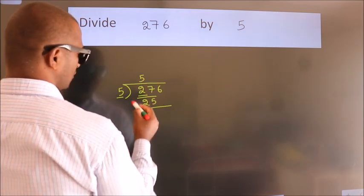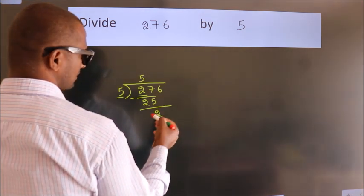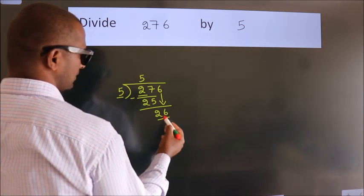Now we should subtract. We get 2. After this, bring down the next number. So, 6 down. So, 26.